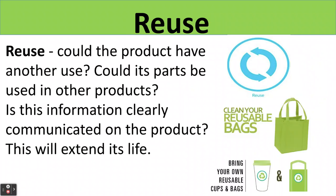Reuse. Could the product have another use, or could it have a second use? Could its parts be used in other products? Is this information clearly communicated on the product to extend its life? For example, reusable bags or reusable cups — if consumers are informed well that these products can be reused, then they can have second, third, and many other lives.